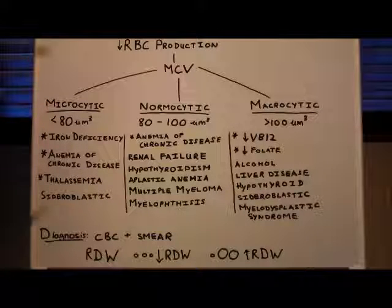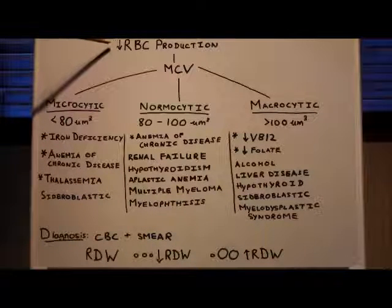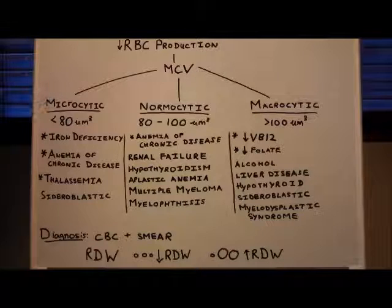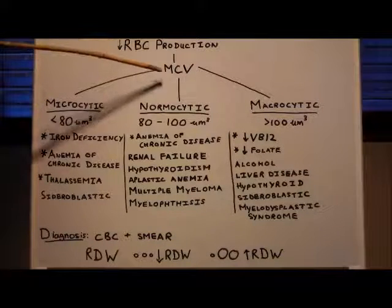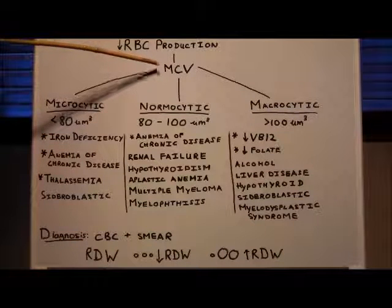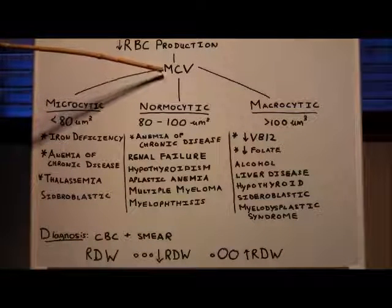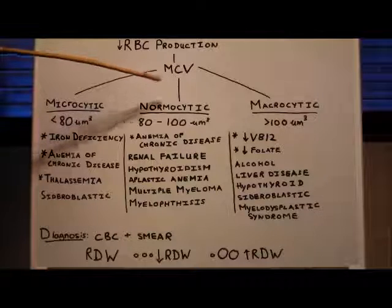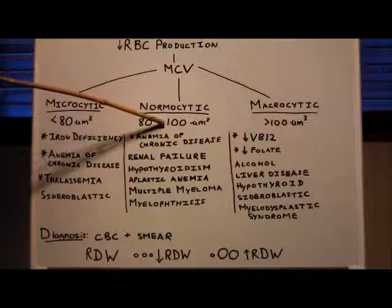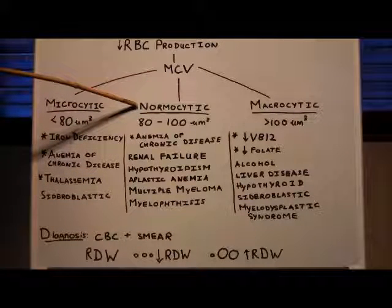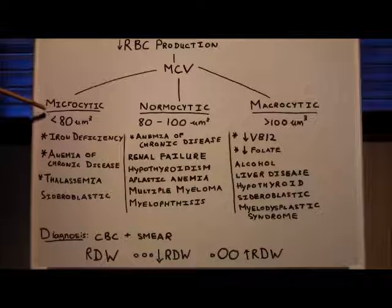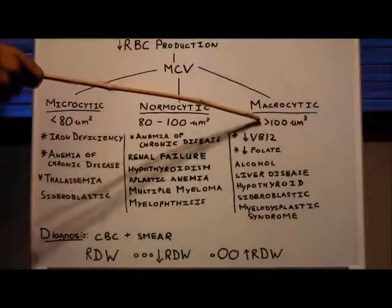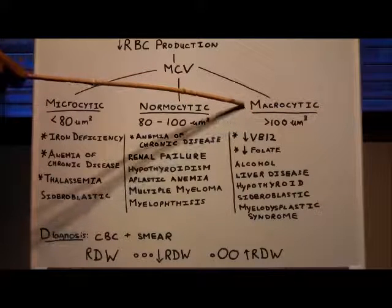For the rest of the video, I'm only going to focus on decreased RBC production. We can separate the causes of decreased RBC production based on MCV - mean corpuscular volume, the volume of the red blood cell. A normal volume is 80 to 100, called normocytic. A decreased volume is less than 80, called microcytic. An increased volume is greater than 100, called macrocytic.